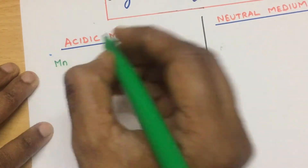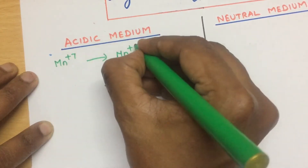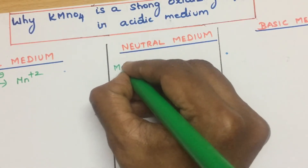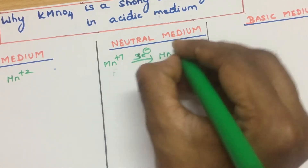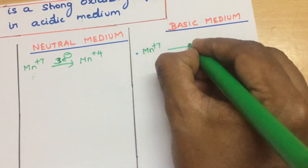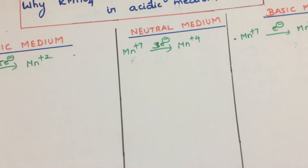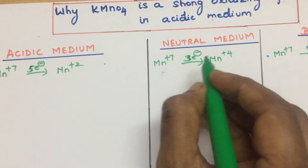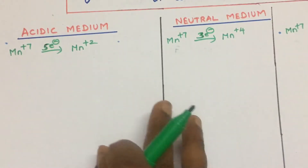Manganese in KMnO4 is in the +7 oxidation state. In acidic medium, after gaining 5 electrons, it converts to Mn2+ ion. In neutral medium, Mn+7 gains only 3 electrons and gets reduced to Mn+4. And in basic medium it gains only 1 electron and gets reduced to the +6 oxidation state. So what makes the difference? Why 5 electrons in acidic, 3 in neutral, and only 1 in basic medium?